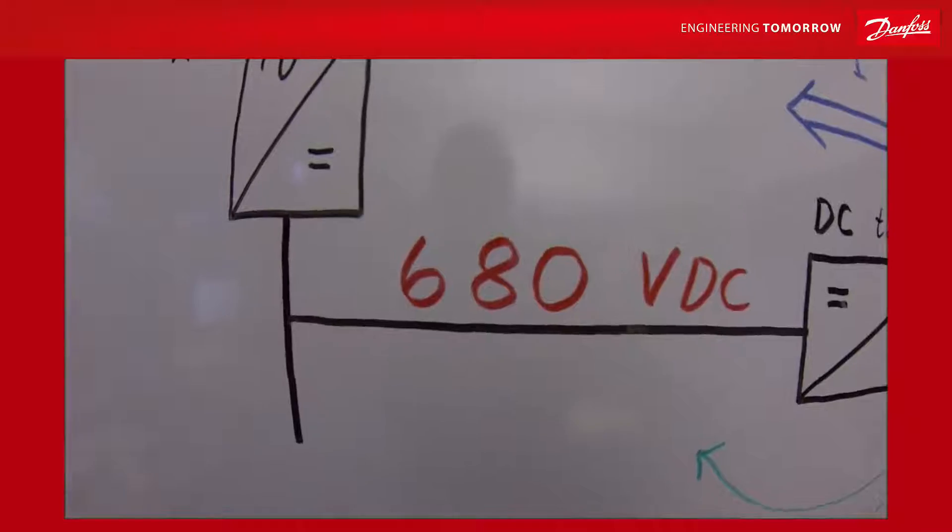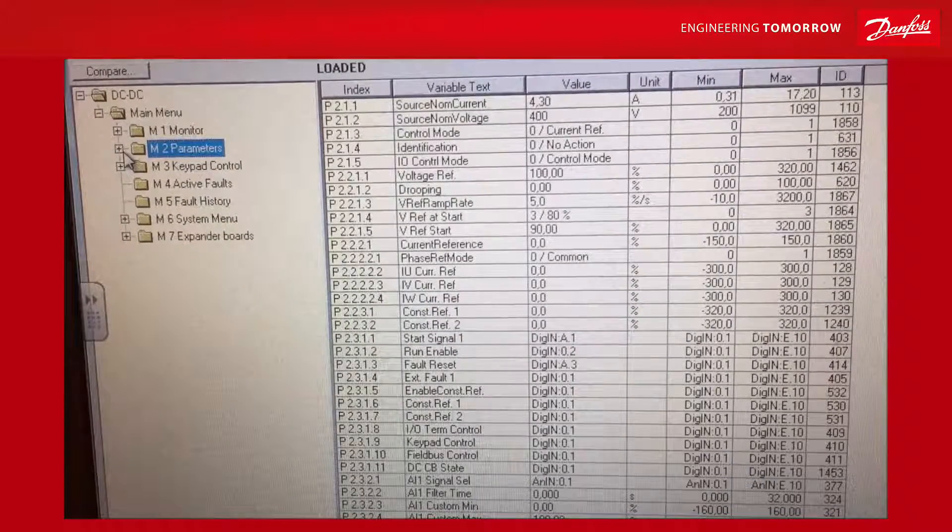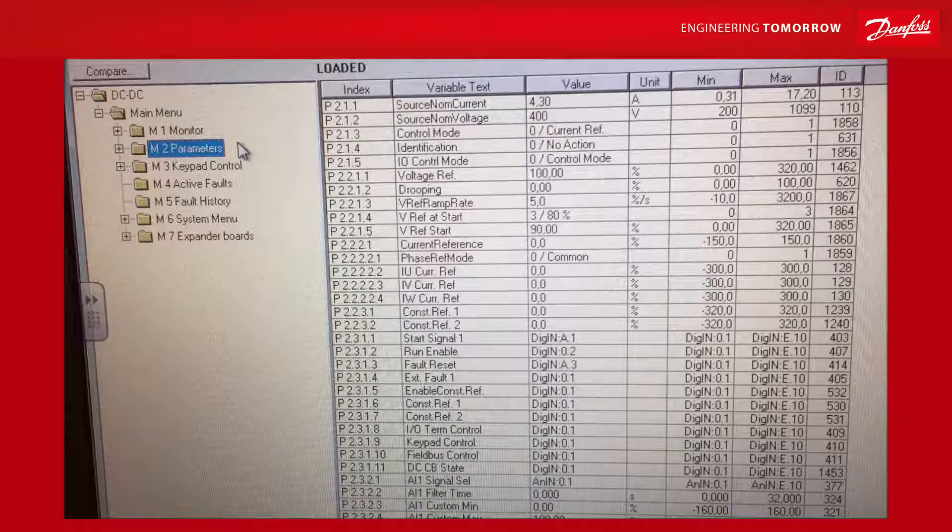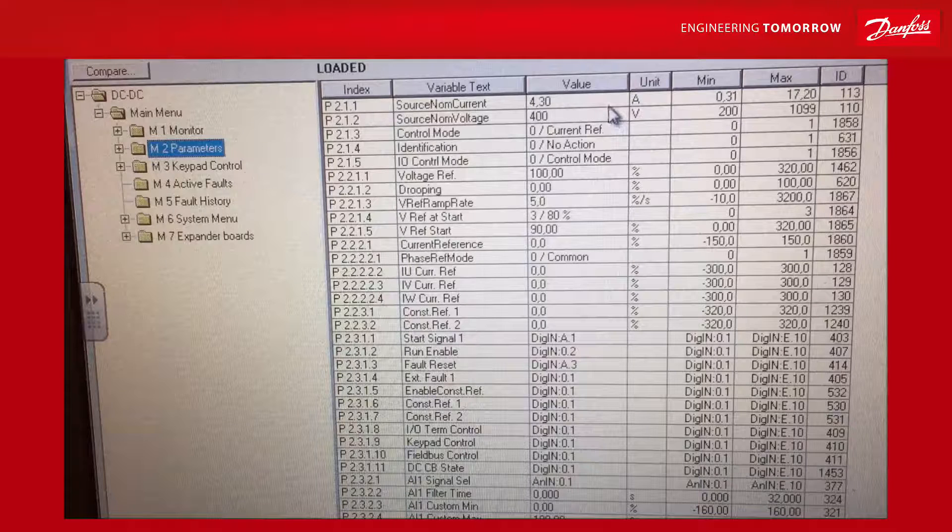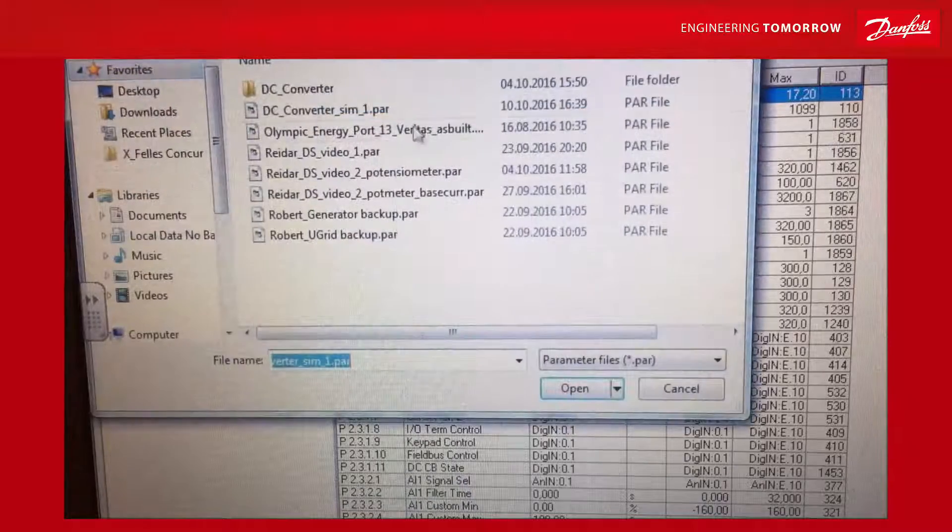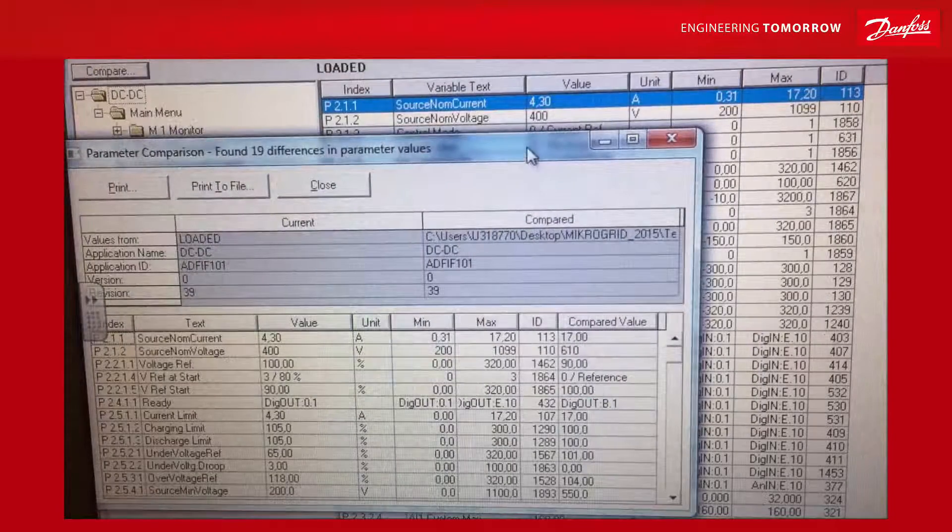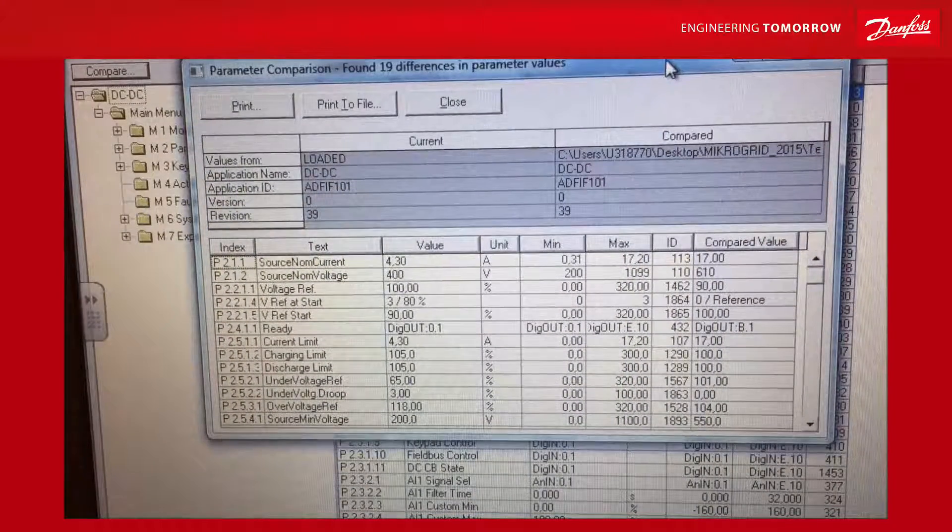We are doing a load drooping of about 3%. So after downloading the application for the DC converter, we will have the parameter list with the default parameters. To make it a little bit quicker, I will do a compare to my old parameters, which I know working for this application. And I will see what we have to change to make it work.